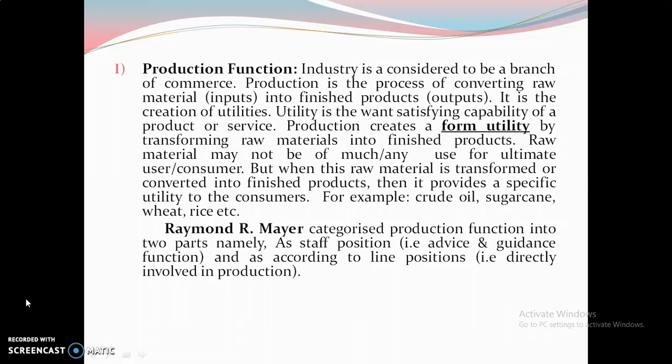1. Production Function. Industry is considered to be a branch of Commerce. Production is the process of converting raw material into finished products. It is the creation of utilities. Utility is the satisfying capability of a product or service. Production creates form utility by transforming raw material into finished products.